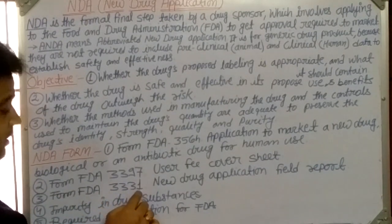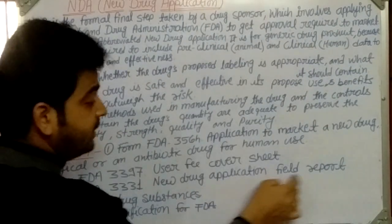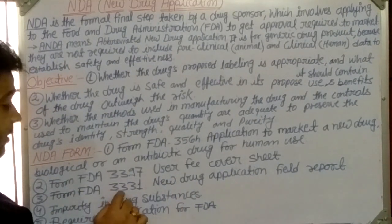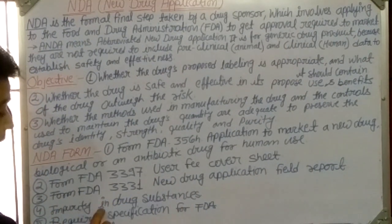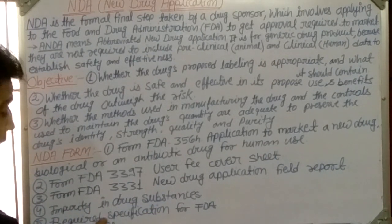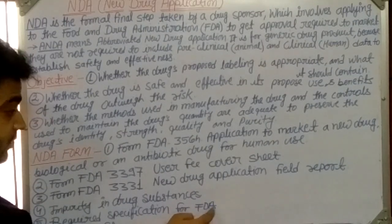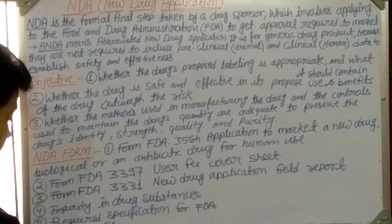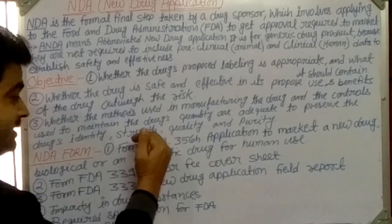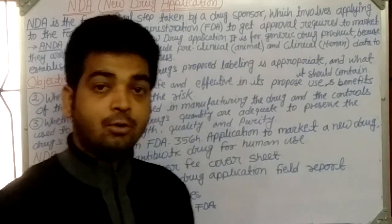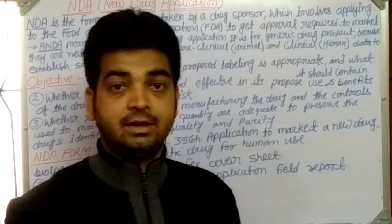The third form is FDA 3331 — the New Drug Application Field Report — which covers all field reports for the new drug. The fourth requirement covers impurities in drug substances, documenting possible impurities in the new drug. The fifth requirement is the specification for each drug master file submitted to the FDA. All these forms must be completed with full details about the new drug before filing to the FDA.